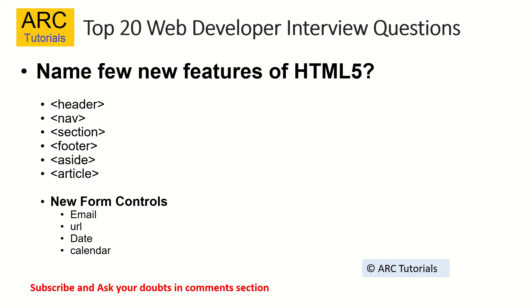Name some new features or tags introduced in HTML5. Some of the tags introduced in HTML5 are header, nav, section, footer, aside, article, video, and audio — all introduced as part of HTML5. There are also new form controls such as email, URL, date, calendar, etc. Whenever you talk about HTML5, mention the semantic web elements and the new form controls.